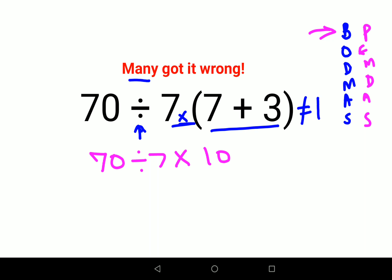They thought that we'll first do 7 into 10, so they did what? 70 divided by 7 into 10 gets you again 70. That is how they got the answer as 1. That's incorrect.